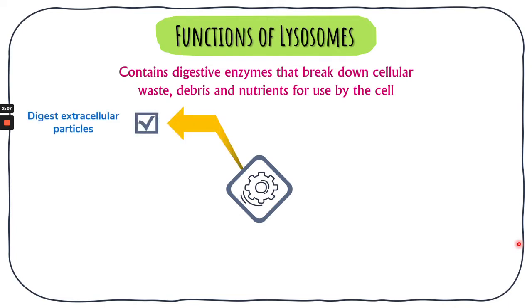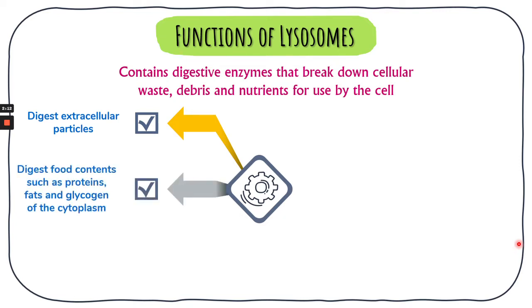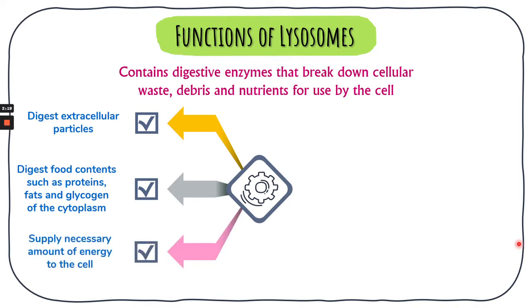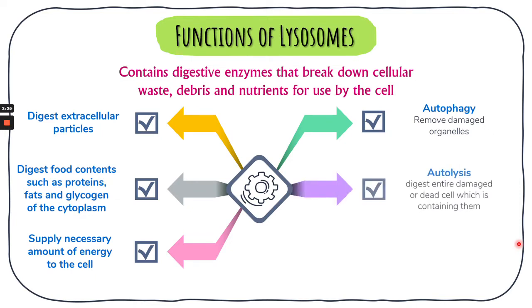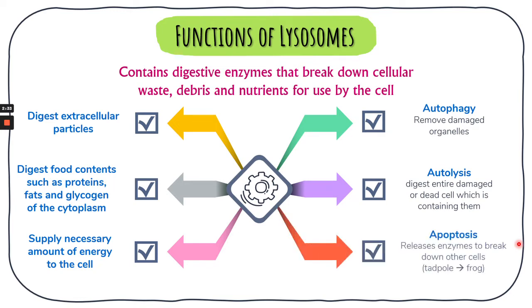Lysosomes help in digesting extracellular particles. They also digest food contents like proteins, fats, and glycogen inside the cytoplasm, thereby supplying the necessary amount of energy to the cell. Lysosomes also involve in autophagy by removing damaged organelles, and play a role in autolysis where they digest entire damaged or dead cells. Lastly, lysosomes also help in apoptosis, where enzymes are used to break down cells — for example, during the transformation of a tadpole becoming a frog.